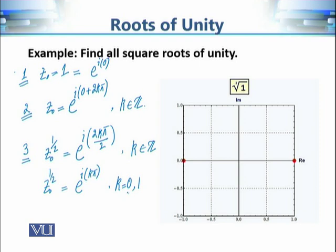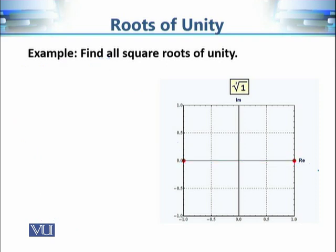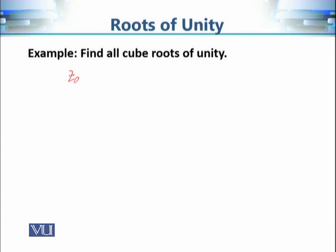When k equals 0 we get 1, and when k equals 1 we get e raised to power i·pi, which is minus 1. So the first root is 1 and the second root is minus 1. This fits with our earlier discussion that the square roots of a complex number lie at opposite ends of a line segment — here, 1 and minus 1 are indeed at opposite ends of a line segment.